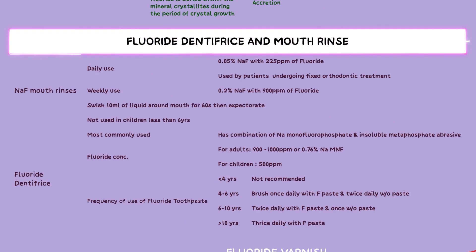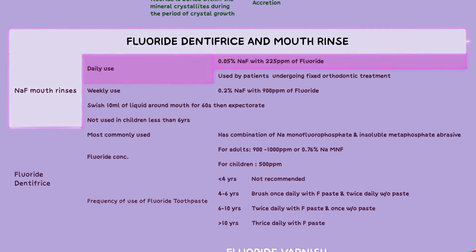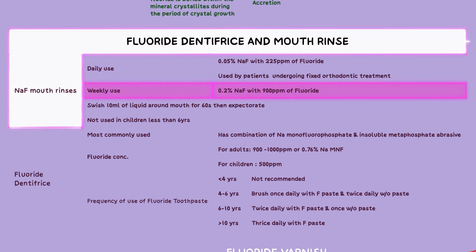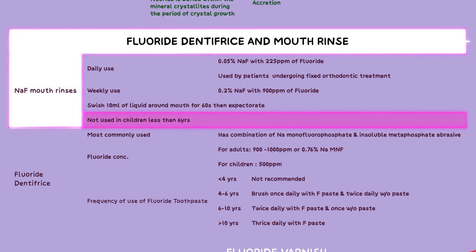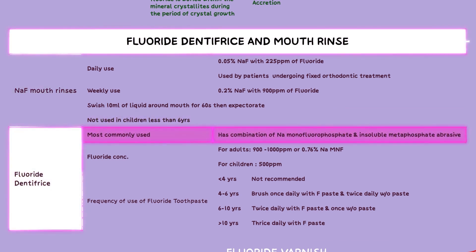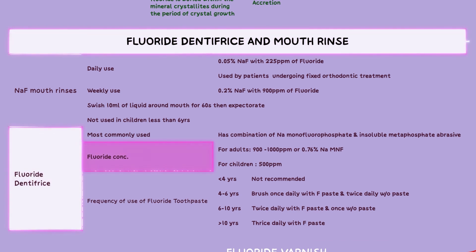Fluoride dentifrices and mouth rinses are commonly used for their caries preventive properties. Sodium fluoride mouth rinses are recommended for daily use at a dosage of 0.05% sodium fluoride with 225 parts per million fluoride, and can be used by patients undergoing fixed orthodontic treatment. For weekly use, the dosage is 0.2% sodium fluoride with 900 parts per million fluoride, used by swishing 10 ml around the mouth for 60 seconds followed by expectoration. It is not recommended for children under 6 years of age. Fluoride dentifrice is the most commonly used product and contains a combination of sodium monofluorophosphate and insoluble metaphosphate abrasive, with fluoride concentration ranging from 900 to 1,000 parts per million or 0.76% for adults and 500 parts per million for children.